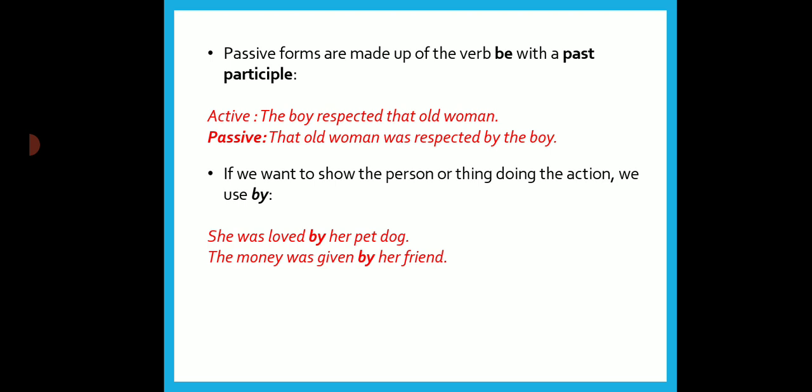For example, for 'write,' the past participle form is 'written'; for 'read,' it is 'read'; for 'come,' it is again 'come.' Let us look at some examples. 'The boy respected that old woman' — passive voice: 'That old woman was respected by the boy.' You add the be form 'was' and the past participle 'respected.' This sentence is in simple past tense. If we want to show the person doing the action, we use 'by.'